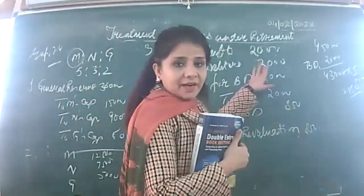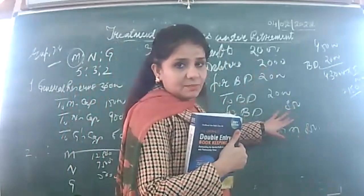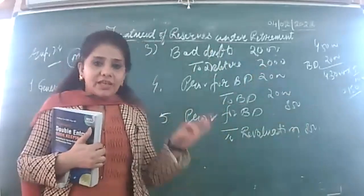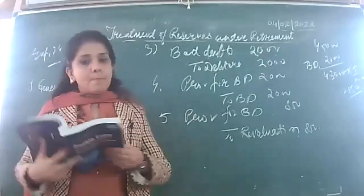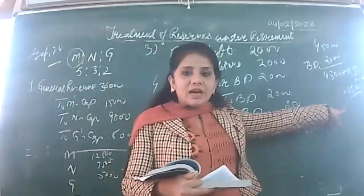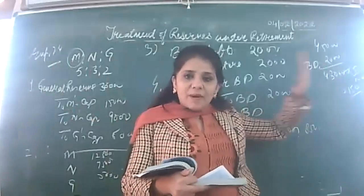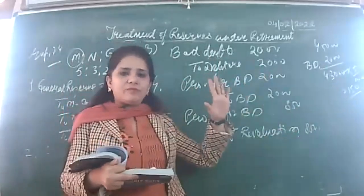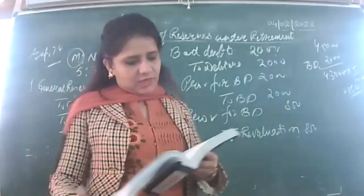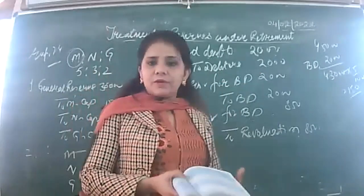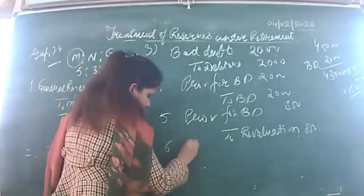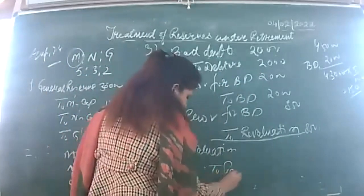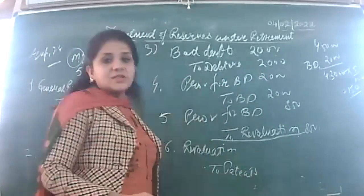Patents will be completely written off: revaluation account debited to patents. All revaluation transactions are being recorded. Also, stock, machinery, and building are to be depreciated — depreciation on stock, depreciation on machinery, depreciation on building — all at 5%. Stock 50,000 × 5% = 2,500; machinery × 5% = 7,500; building × 5% = 5,000.